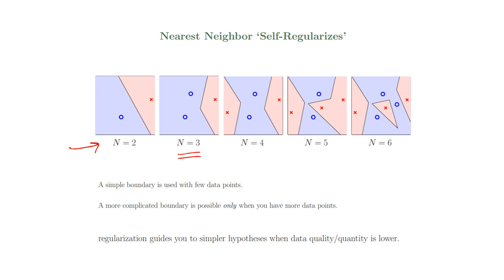And when we have three points, the way this region is divided - the way we get our hypotheses - it gets a little more complex. Because with three points, they might have different classes depending on whatever the data is. And so there is a general trend that we see as the data points are increasing.